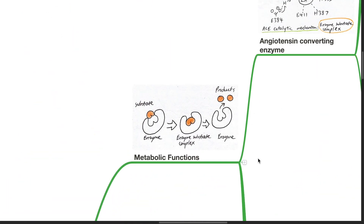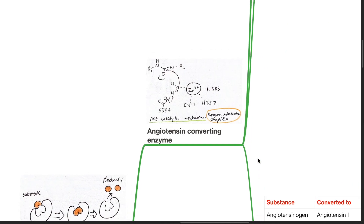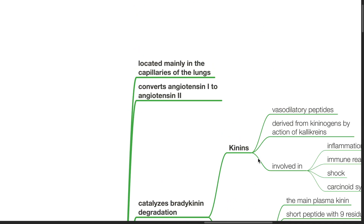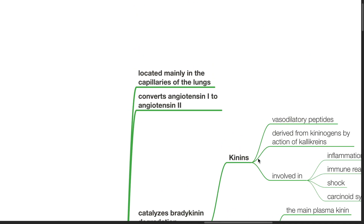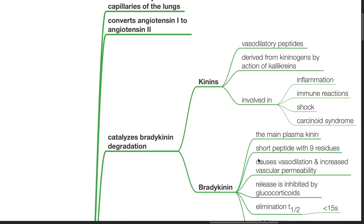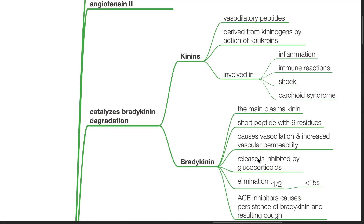Metabolic functions. Angiotensin converting enzyme is located mainly in the capillaries of the lungs. It converts angiotensin 1 to angiotensin 2. Angiotensin converting enzyme also catalyzes bradykinin degradation.